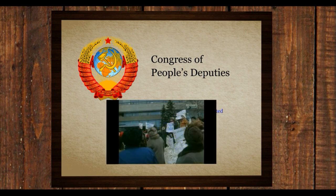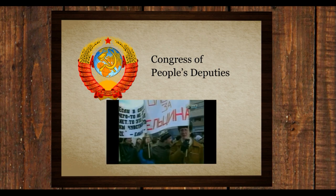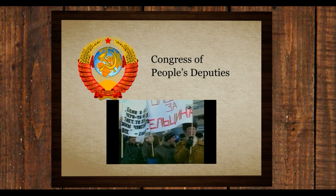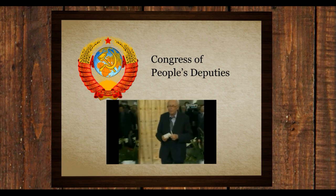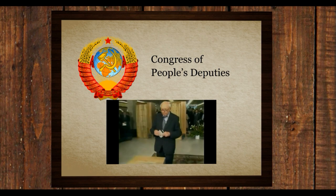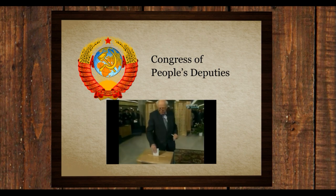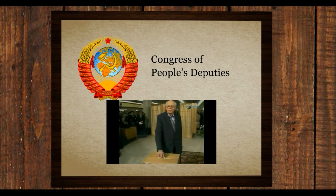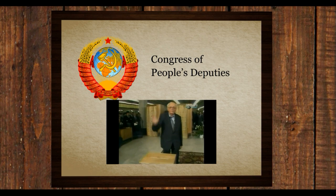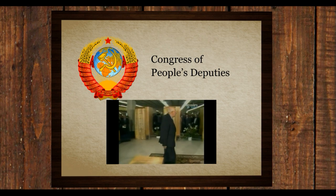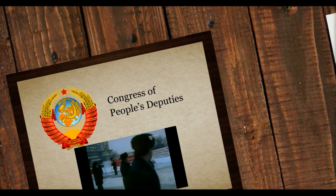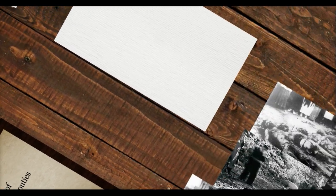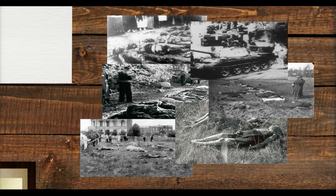The Soviet public became more politically engaged with their new freedoms of open speech and elections, and used this to make their critiques of Moscow heard. Each republic within the Union sent their own representatives to the Congress of People's Deputies in the March 1989 election, from unionist reformists to nationalist revolutionaries. With more freedom to speak out against Moscow, the stage was set for further exposure of the wrongdoings, mostly under Stalin, that the Soviet Union had covered up for so long.